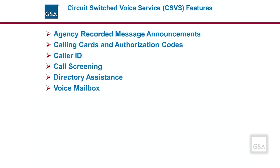Some of the general features included with all circuit-switched voice service options include agency-recorded message announcements, calling cards and authorization codes, caller ID, call screening, directory assistance, and voice mailbox.